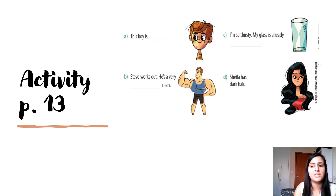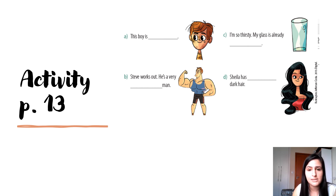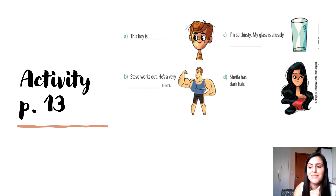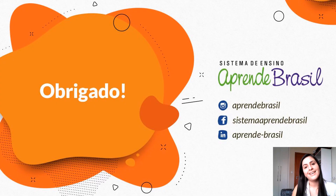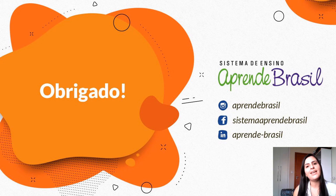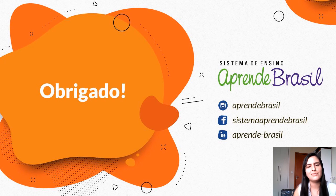Here we have another activity at page 13. Eu gostaria que vocês completassem — inclusive com alguns adjetivos daquela lista. This boy is... I'm so thirsty. My glasses are ready. Letter B: Steve works out — he's a very... Sheila has dark hair. Guys, não vai dar tempo de corrigir a atividade nesse vídeo, então fiquem ligados no próximo vídeo em que nós faremos a correção e eu vou mostrar um jogo online para praticar adjetivos comparativos e superlativos.